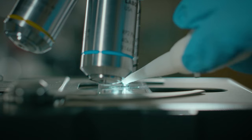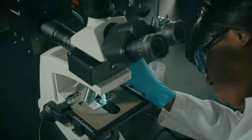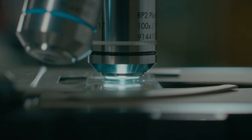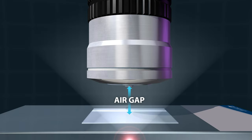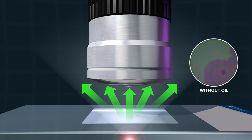Let's talk about oil immersion. We need to use oil to see at the highest magnification. Without getting too technical, there's an air gap between the top of the cover slip and the front lens. This gap actually causes light to bend or refract. These scattered rays of light don't travel through the objective lens and are lost to the image.